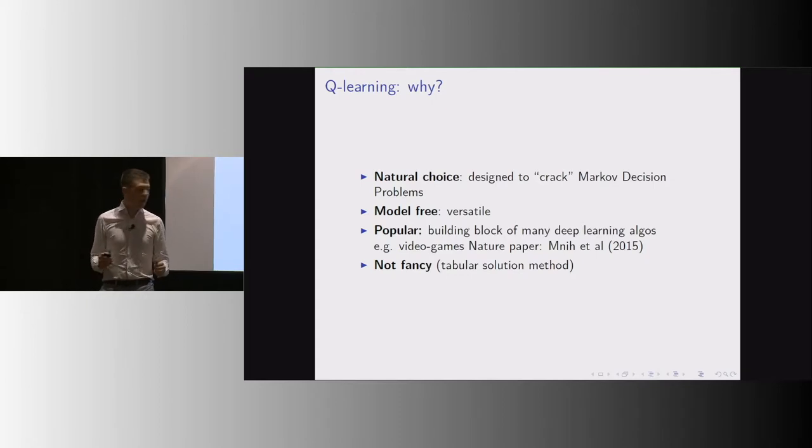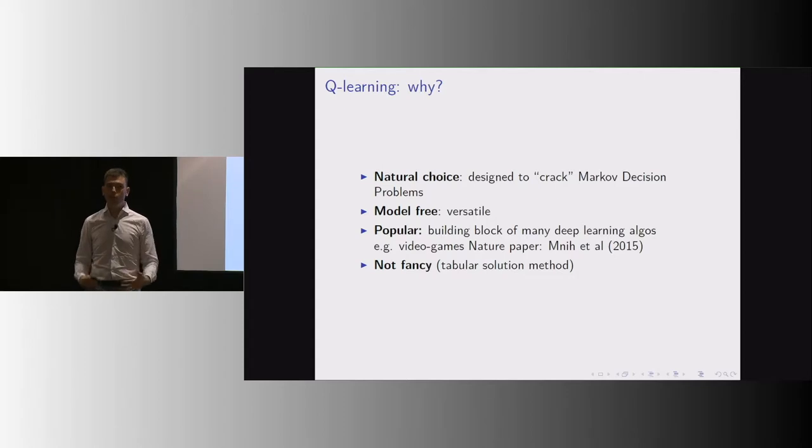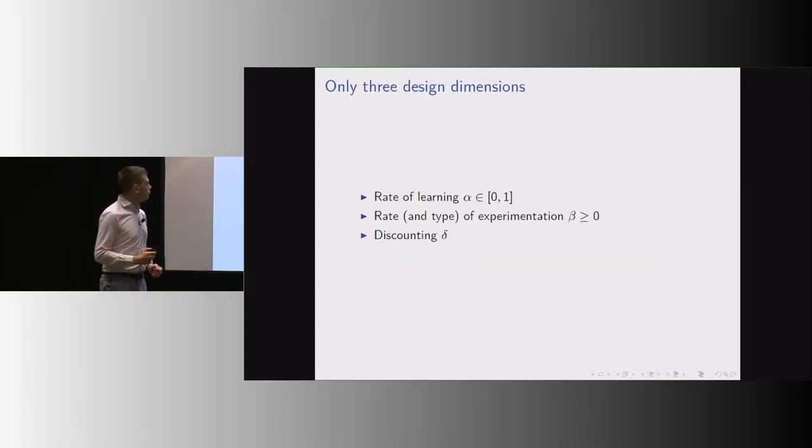The version that we employ is what is called a tabular solution method. This means that we expect fancier versions. As we add sophistication to the algorithm, we expect these insights to hold up. And this also means that it's very simple.